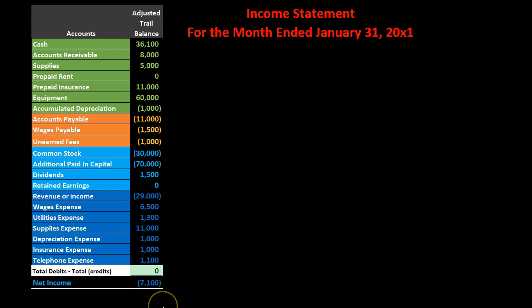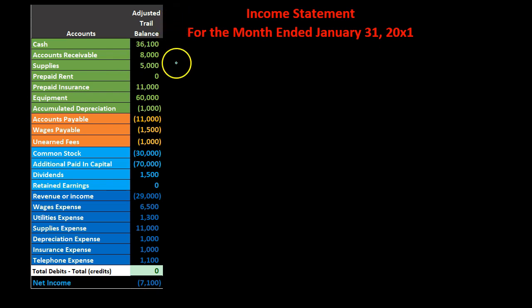In our prior presentations we have taken a look at the construction of the balance sheet, and now we're going to move on to the construction of the income statement. Our goal is to change this adjusted trial balance, which is in a debit and credit format, to financial statements — the end product of our accounting cycle — which is in the format of a plus and minus financial statement.